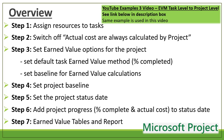In Microsoft Project we will follow the following steps. Step 1 is assigning resources to tasks. Step 2 is going to options and switching off 'actual costs are always calculated by project,' because we are going to add our actual cost manually. Step 3 is setting some earned value options — the default task earned value method to percentage complete, and setting the baseline for earned value calculations. Step 4 is setting our project baseline. Step 5 is setting our project status date. Step 6 is adding our project progress — the percentage complete and actual cost up to the status date. Step 7 is showing some earned value tables and an earned value report.